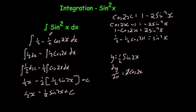So to integrate sine squared x: use the double angle formula to change it into an expression involving cos 2x, write out the integral in terms of cos 2x, integrate it, and you'll get your answer.